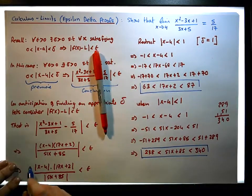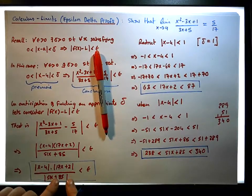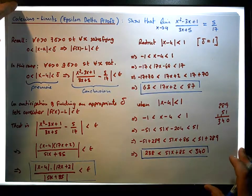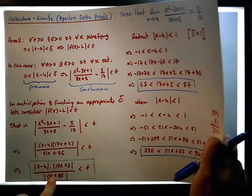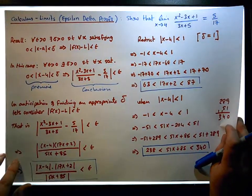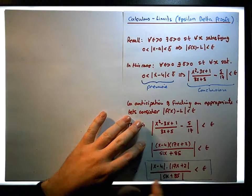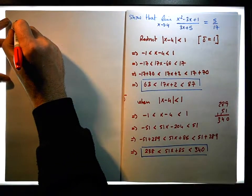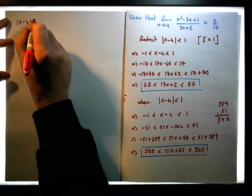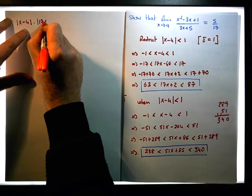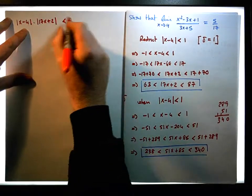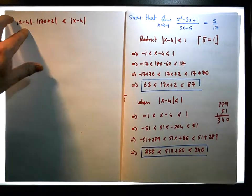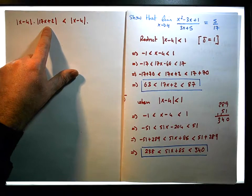So now we can go back to this particular fact. This is all the work — you just have to have the tenacity here, and we're doing this before we even start the proof; we're just trying to find the appropriate delta. So now let's go back to this particular fact: we need to find a delta that satisfies this particular condition. From this fact and the condition we have, the absolute value of x minus 4 times the absolute value of 17x plus 2 must be less than the absolute value of x minus 4 times a number that's bigger than 17x plus 2.